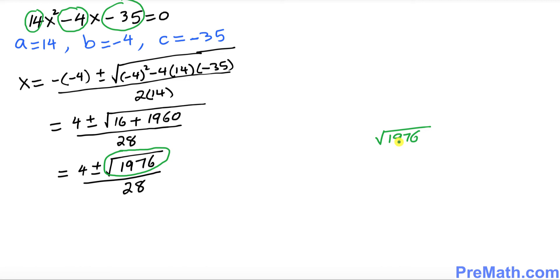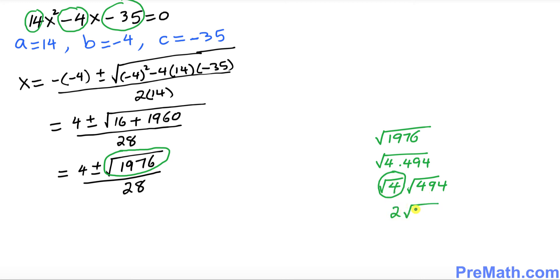Now let's simplify the square root of 1976. We can write 1976 as 4 times 494. Splitting the radical, the square root of 4 is simply 2, so the square root of 1976 equals 2 times the square root of 494. Thus we can write x equals 4 plus or minus 2 times the square root of 494, all divided by 28.